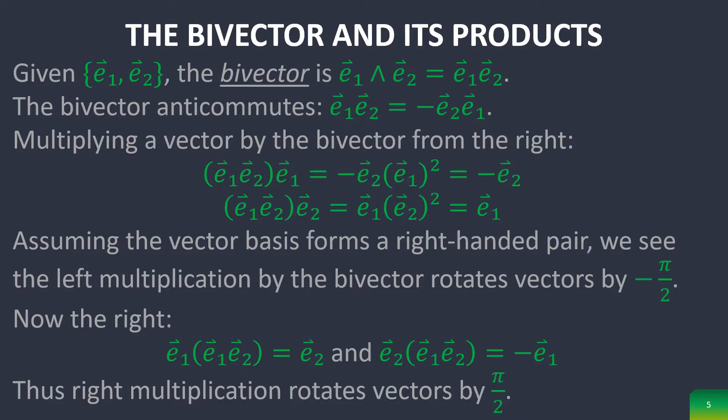The bivector thus anticommutes. And if you multiply a vector by the bivector in planar geometric algebra, on the left-hand side, you rotate that vector by 90 degrees clockwise, which is also equal to negative pi over 2. And if you multiply it from the right, then you rotate it by pi over 2, which is anticlockwise 90 degrees.